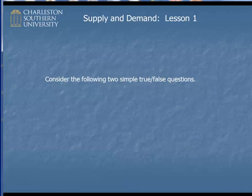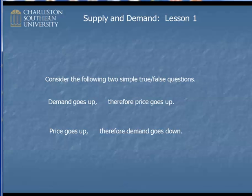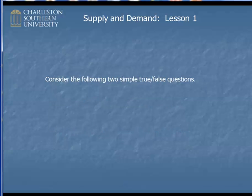Consider the following two simple true-false statements. The first: demand goes up, therefore the price goes up. And the second: the price goes up, therefore the demand goes down. If you ask any reasonably educated person about these two statements, they would probably indicate that they are both true. But consider this — in the first case, demand and price are moving in the same direction. In the second case, price goes up and therefore demand goes down — they move in opposite directions. When you put them together, it seems impossible. How could they both be true?